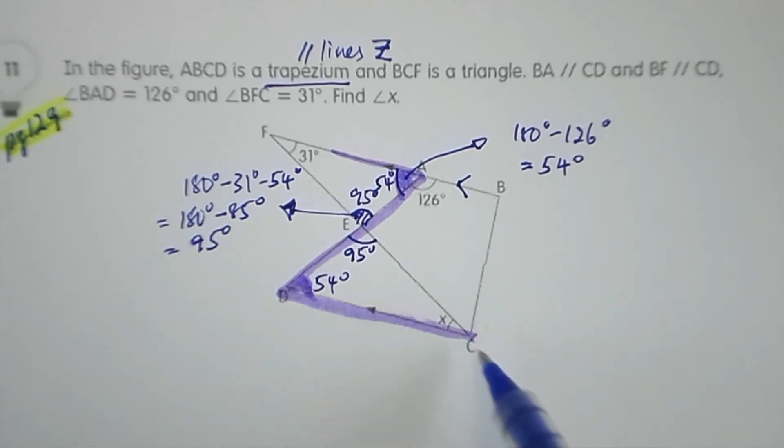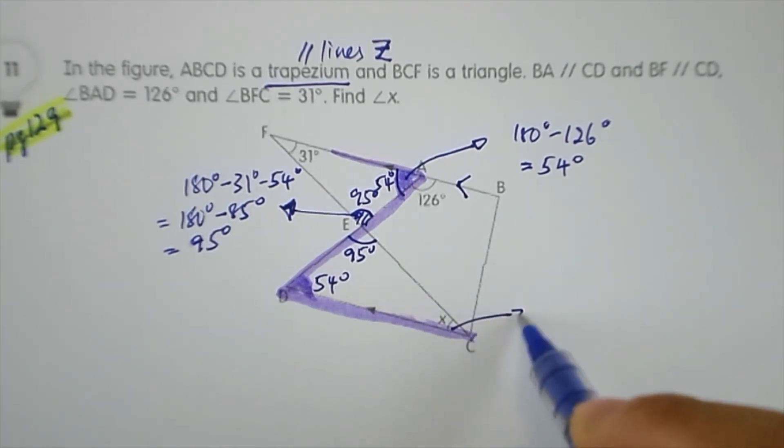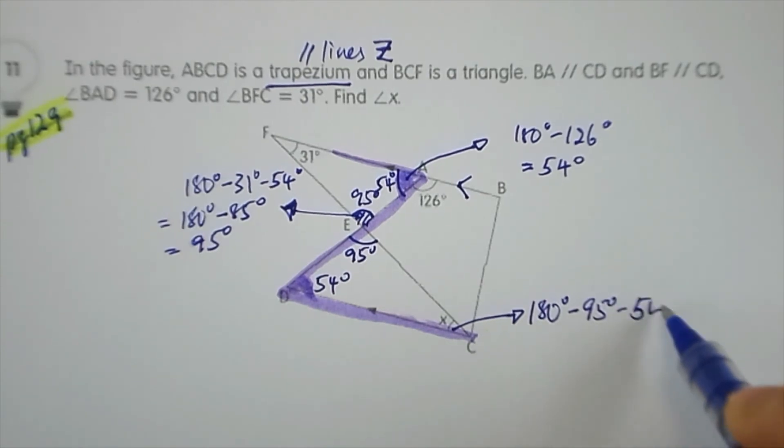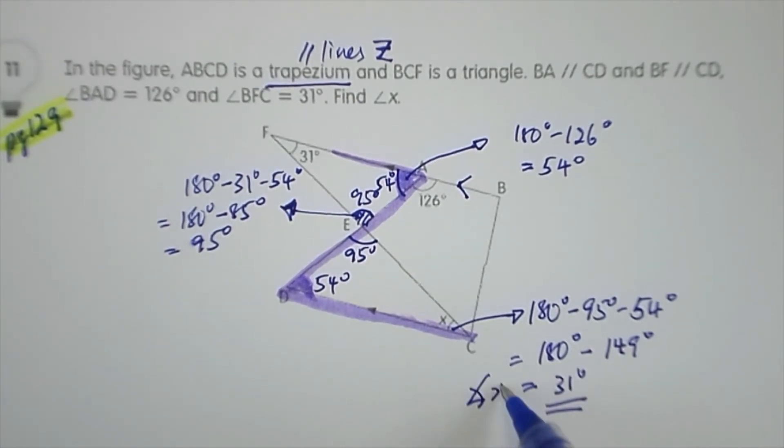Hence we can find angle X. The internal angles of a triangle add up to 180 degrees. So 180 degrees minus 95 degrees minus 54 degrees gives us 180 degrees minus 149 degrees, which equals 31 degrees. This is the answer for angle X.